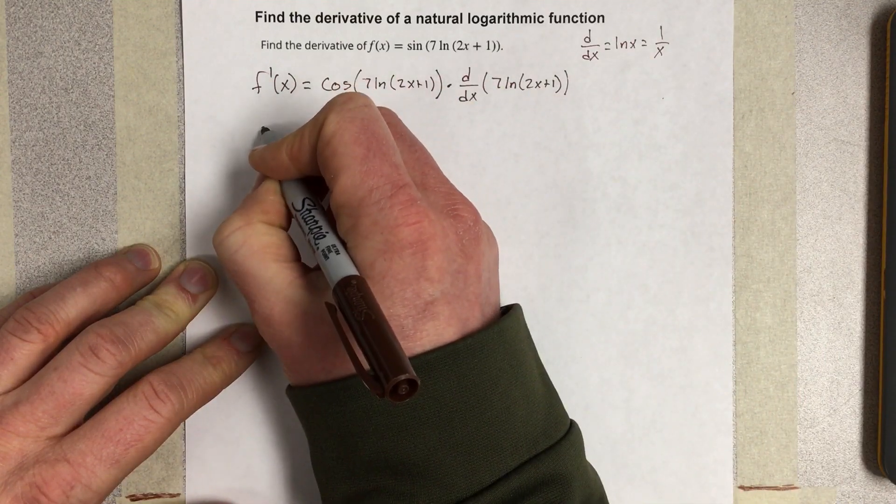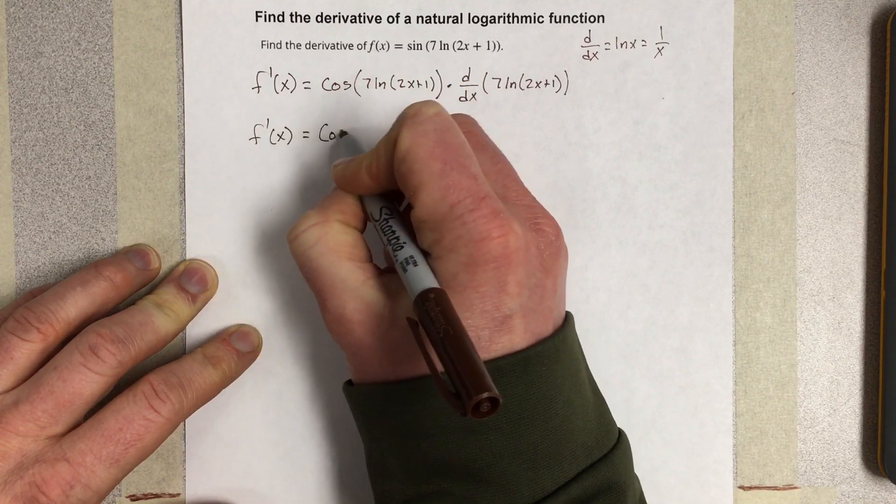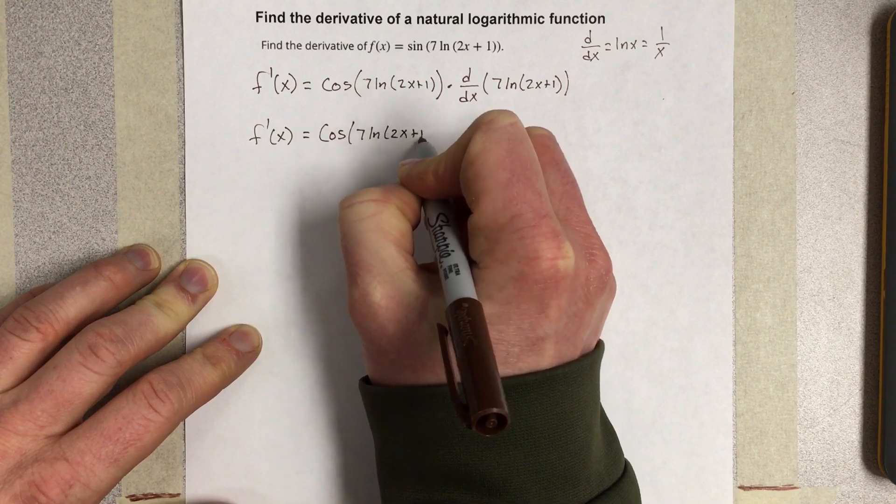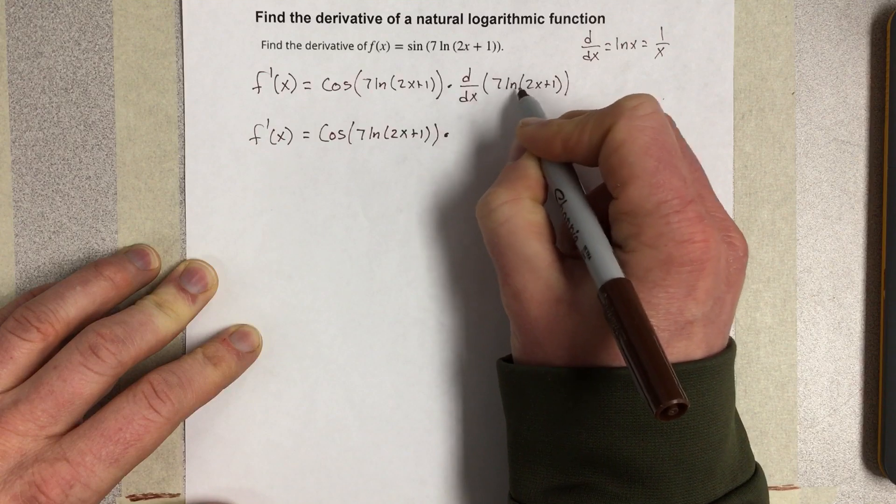I'm going to end up with f'(x) = cos(7*ln(2x+1)) times, when I take this derivative,